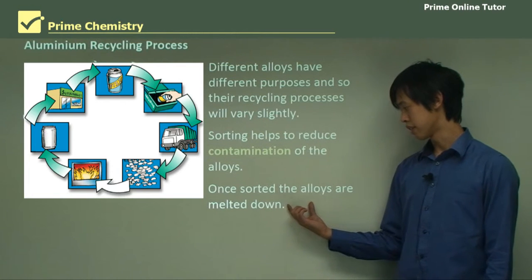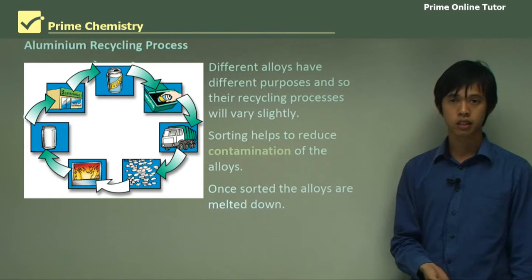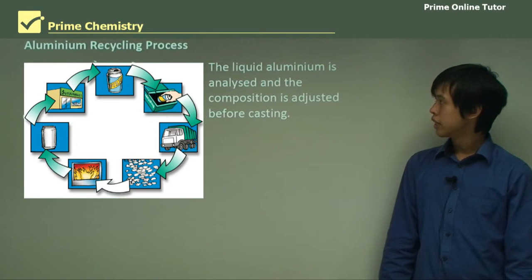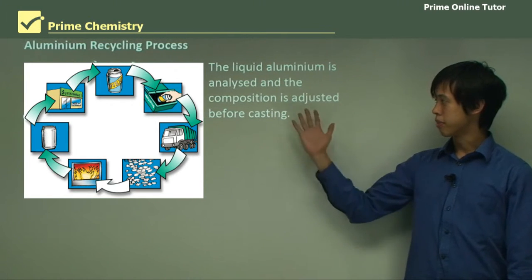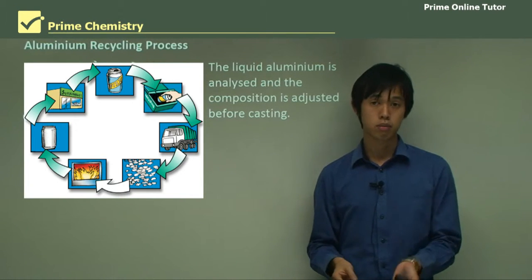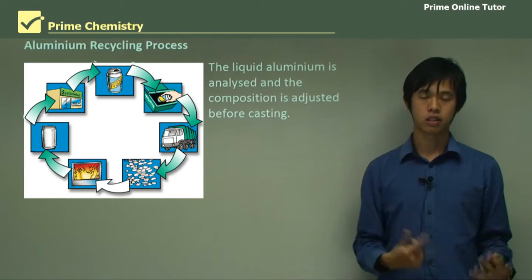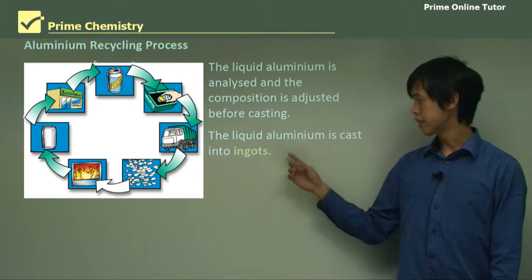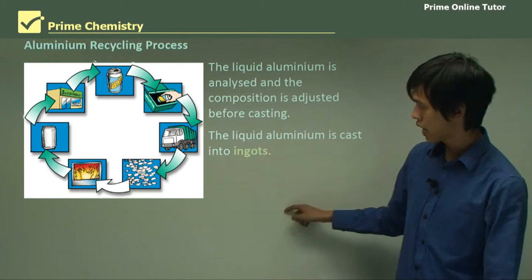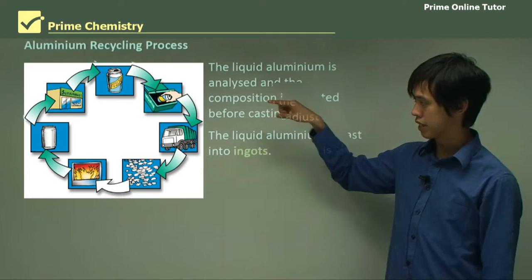Once the alloys are sorted, they are melted down. The liquid aluminium is then analysed and the composition is adjusted just before casting — if there are any impurities still present, we make sure to take them out. The liquid aluminium is then cast into ingots.